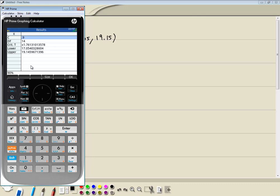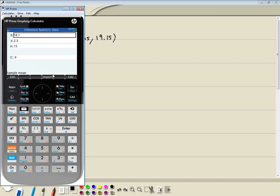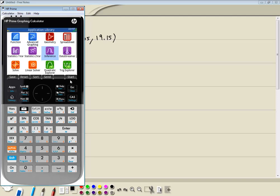So that would be our confidence interval. Now to get out of this, you just click your OK here and click your apps. Takes you back to your main menu.